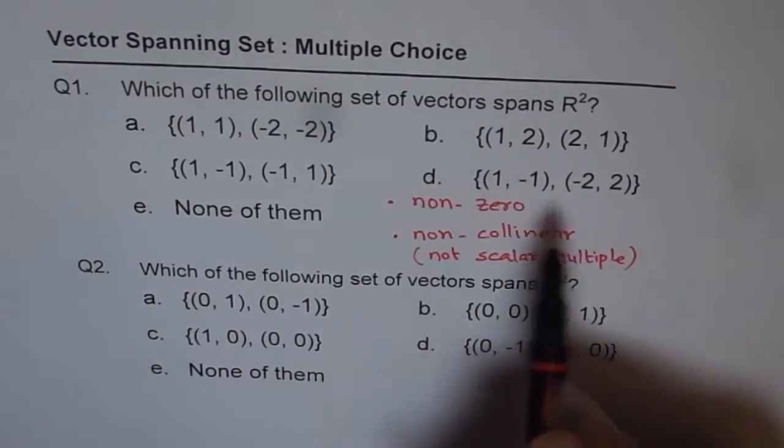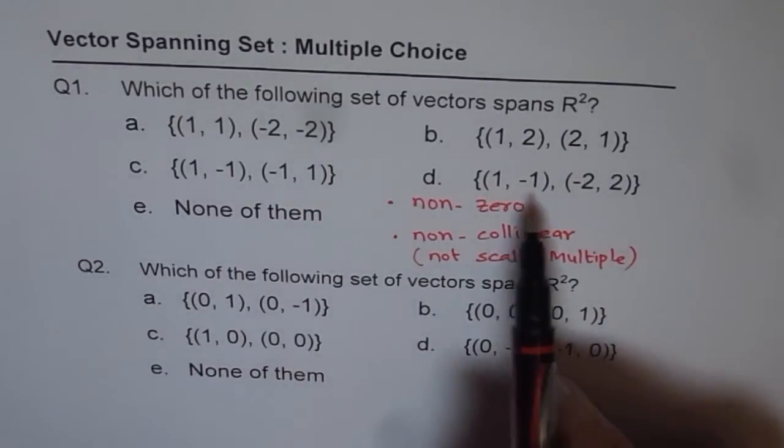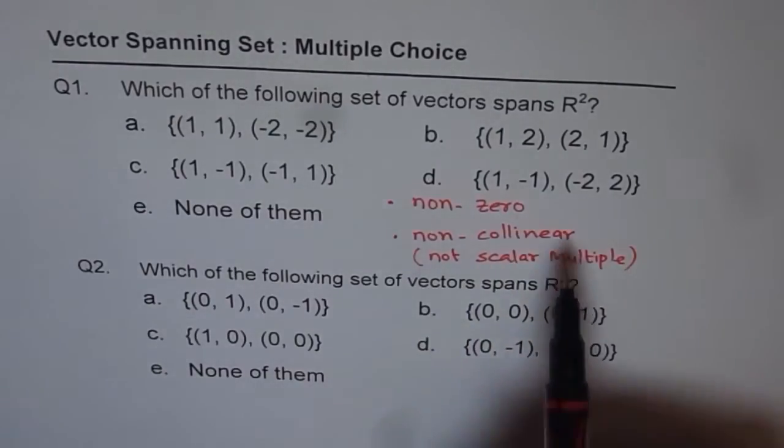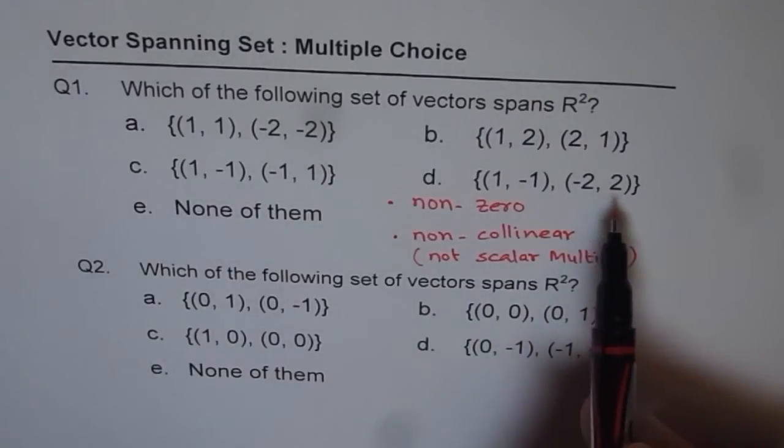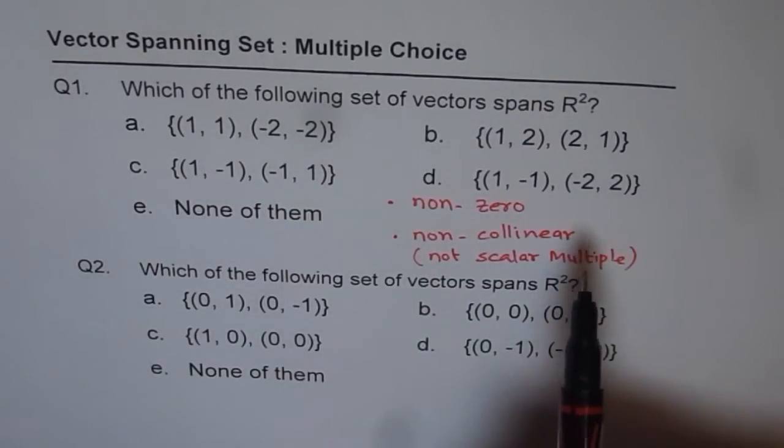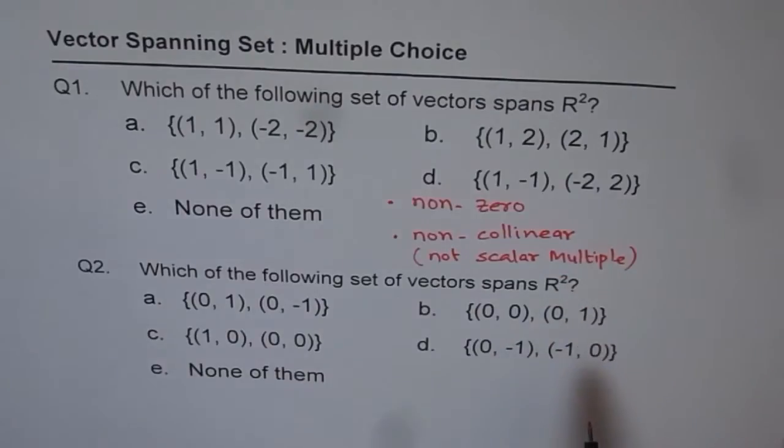So if the set does not have a zero vector or if they are not collinear or not scalar multiples then they can span in R2. So with this let's now figure out which is the right set.